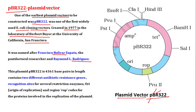PBR322 has a total length of 4361 base pairs — that is the size of the whole circular plasmid. It carries two antibiotic resistance genes: one for ampicillin resistance and one for tetracycline resistance, shown in pink in the diagram. This plasmid provides resistance to both ampicillin and tetracycline antibiotics.